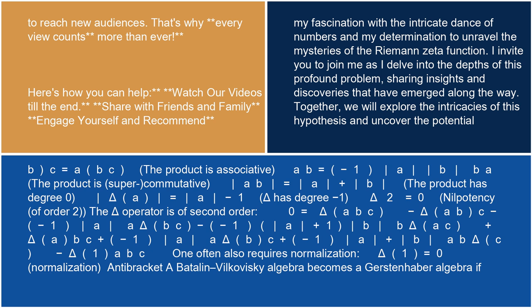The delta operator is of second order: 0 equals delta(ABC) minus delta(AB)·C minus (minus 1)^|A| · A · delta(B)·C minus (minus 1)^(|A|+|B|) · B · delta(AC) plus delta(A)·BC plus (minus 1)^|A| · A · delta(B)·C plus (minus 1)^(|A|+|B|) · AB · delta(C) minus delta(1)·ABC. Normalization often also requires delta(1) equals 0.